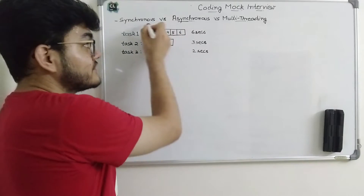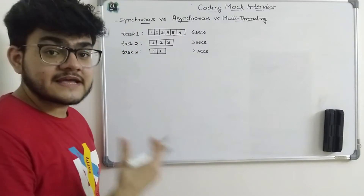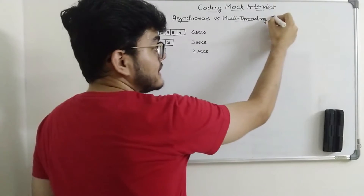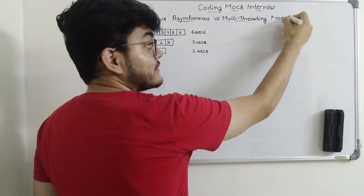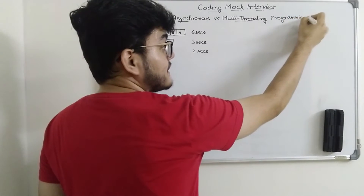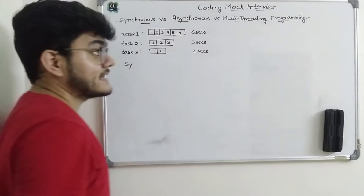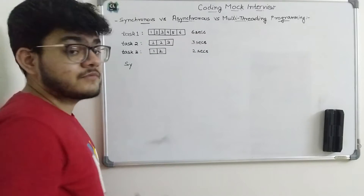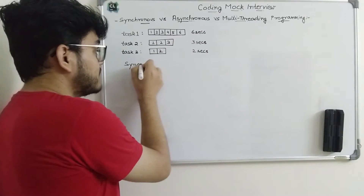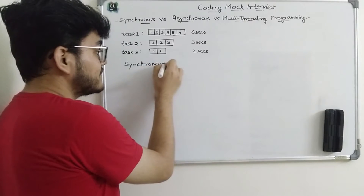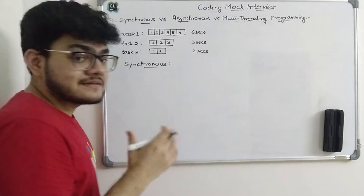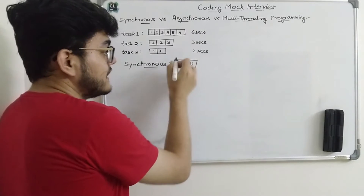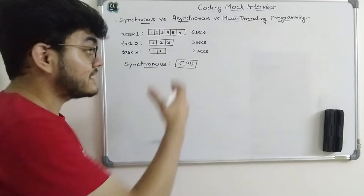Let's discuss the first one, which is the most simple: synchronous programming. These are all programming techniques — multi-threaded programming, asynchronous programming, and synchronous programming. These three are programming techniques and as a programmer you must know when you should use which type. In synchronous programming, we have a CPU that is going to execute these three tasks.